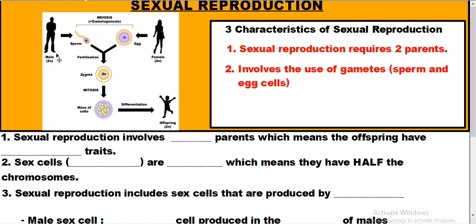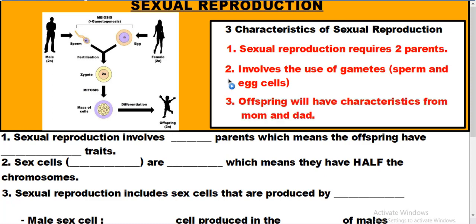The sperm cell is developed and produced by the male, which is why you need one male partner in sexual reproduction. The female contributes the egg, which is why you need a female partner. You need two parents because you have to get a sex cell from each one of those parents.